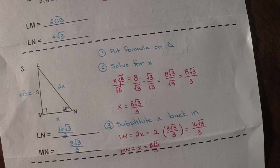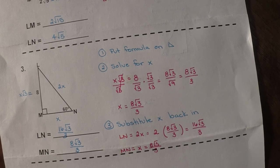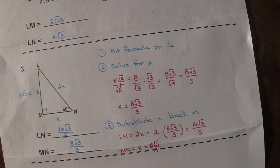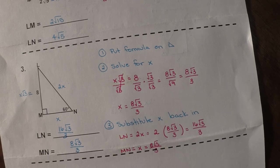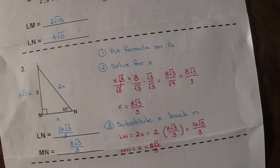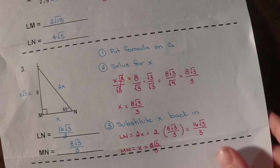So again, if they divide evenly and they give you a clean decimal, then you can use the decimal. Otherwise, you need to stick with the fractions. And with 3s, a lot of them will be fractions. Awesome. Okay. Now let's look at number 4, the last one.